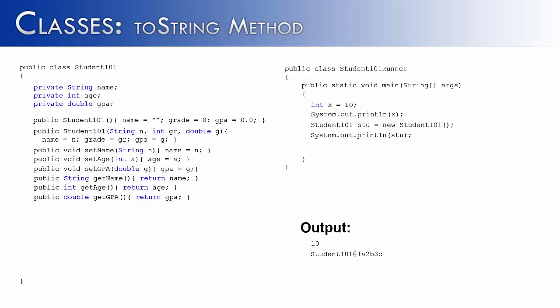And what is it printing out? At first glance, it looks like gibberish. Student 101 at 1a2b3c? What in the world does that mean? What it means is the reference of where that stu object is being stored in memory. And I know you woke up this morning and you said, I wonder where the object that I just created is stored in memory. Probably not. Let's then ask, why is it printing that out? Why are we getting this memory reference? Well the answer is, what else is it going to print out?